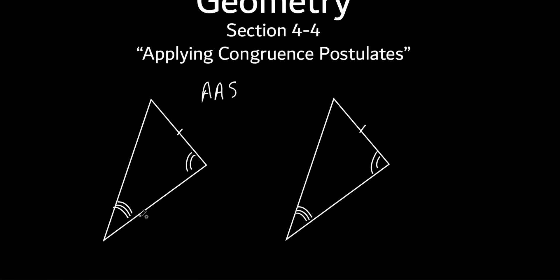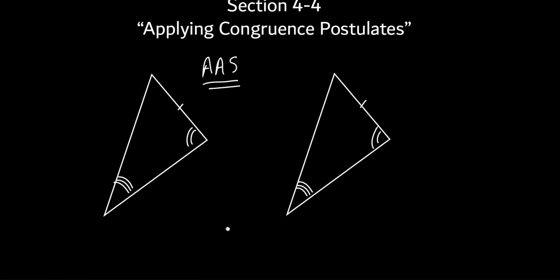If you wanted to, you could always say: if these two are equal to these two, then this is equal to this, and they're congruent because of angle-side-angle. But you could also just look and say, they gave me two angles and a non-included side equals two angles and a non-included side, so these triangles must be congruent to each other because of angle-angle-side. This is a theorem, because it's taken from a postulate.